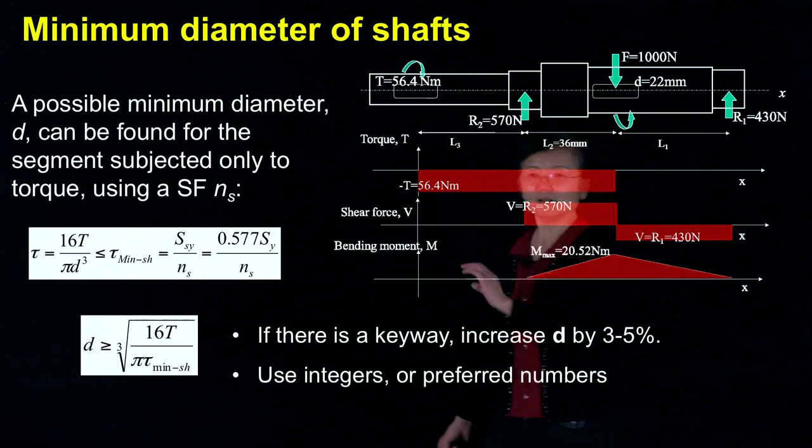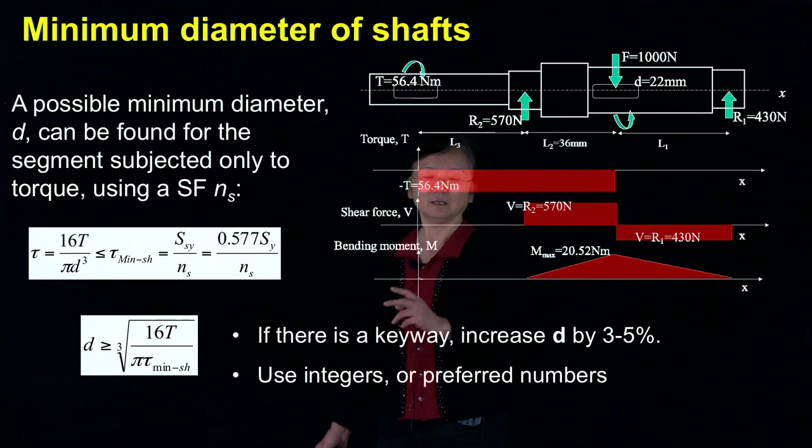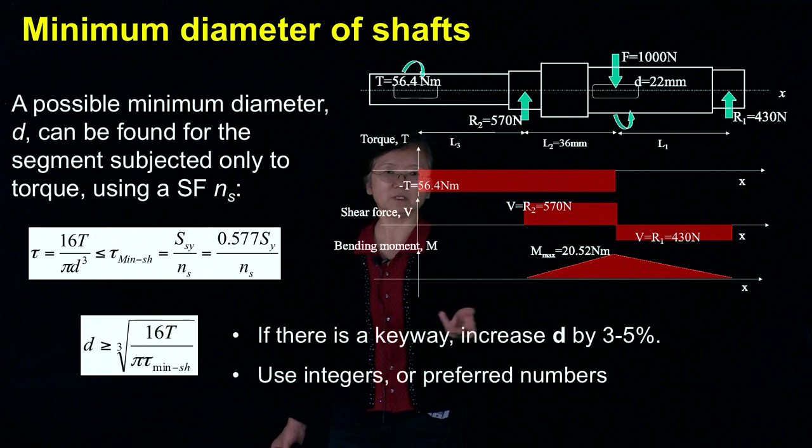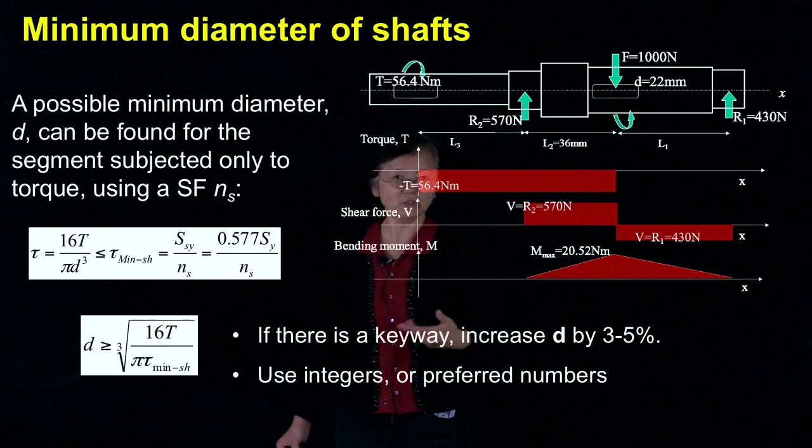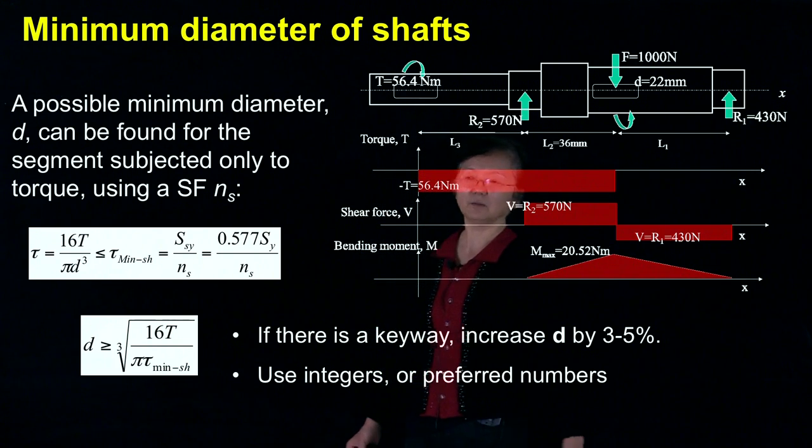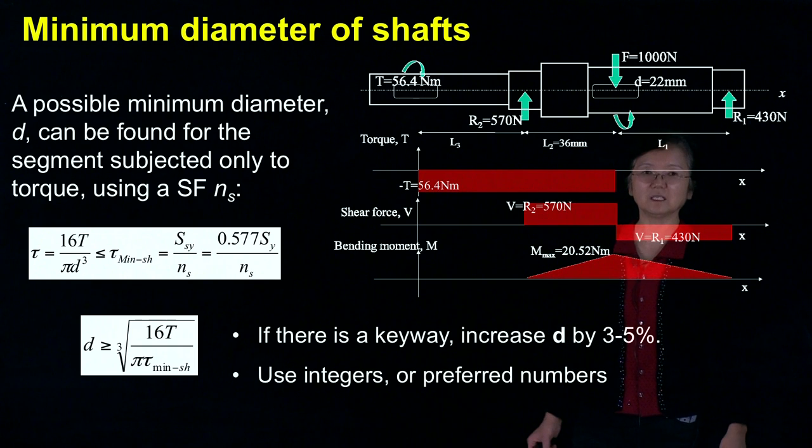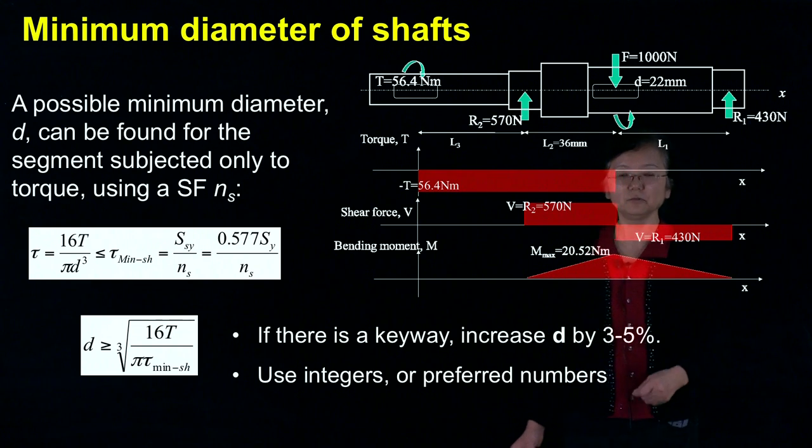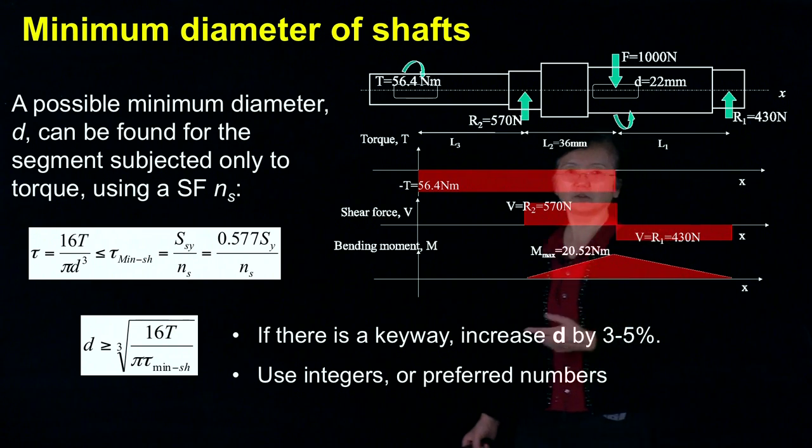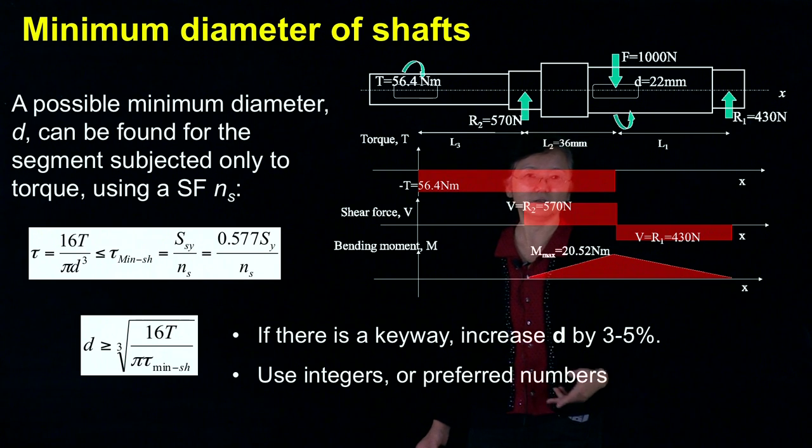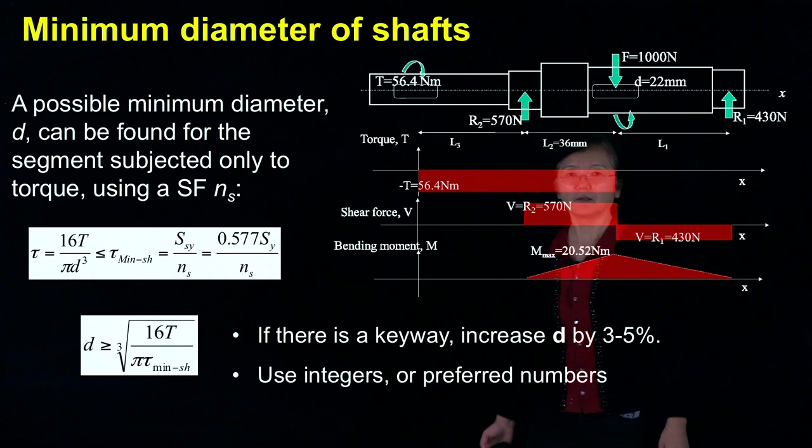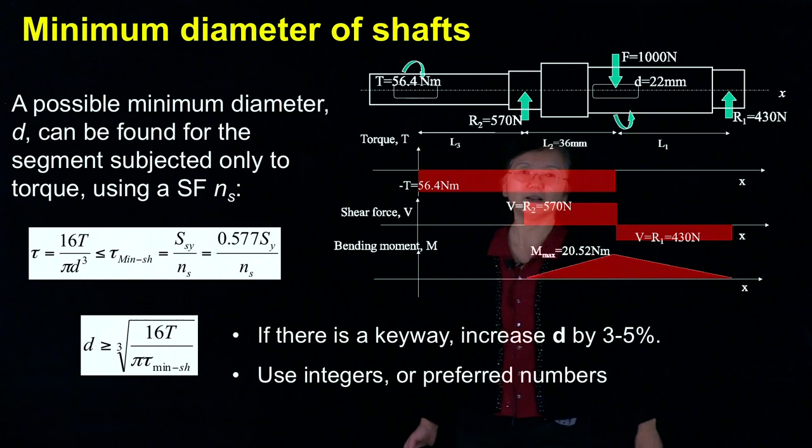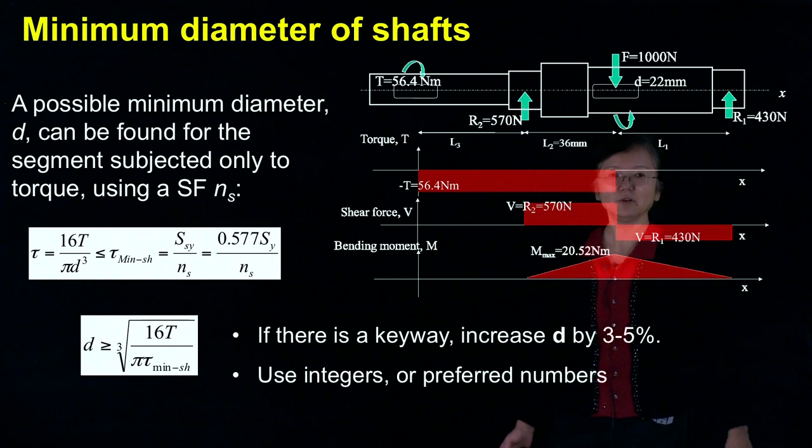And the other things that we don't like the 17.24, 17.29, things like that. So we use integers, and better to use preferred numbers. Usually, you know, 2, 4, 8, those sort of even numbers. 0 and 5 are preferred numbers. However, this is not an end yet. We have to consider more issues.